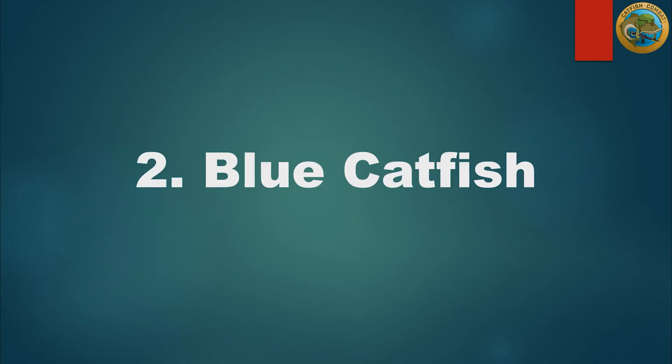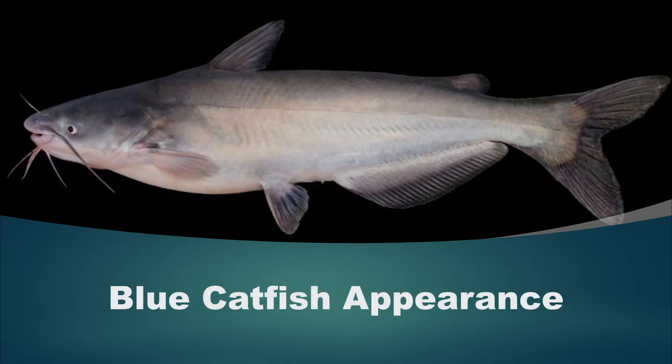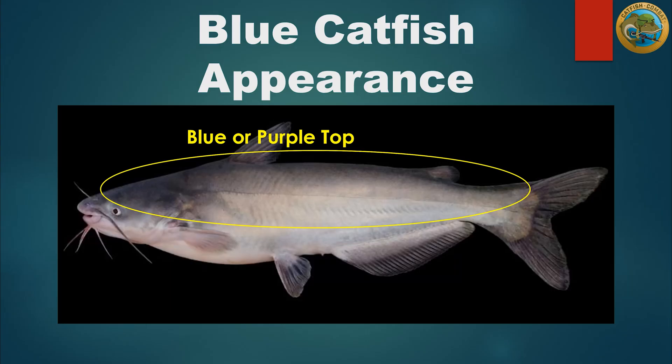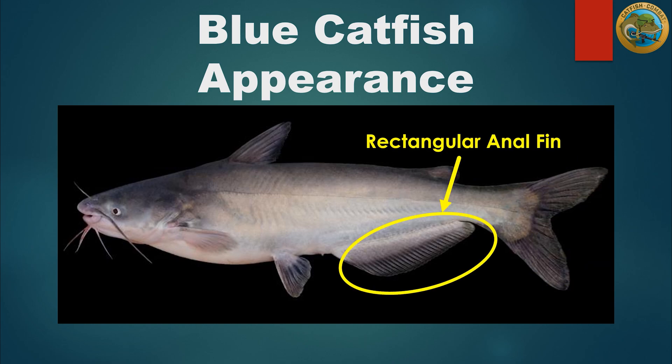Next up is the mighty blue catfish. If there was a fish in American waters that's the bully on the playground and regularly beats out all the other fish and takes their lunch money, it's the blue catfish. This fish is one of the meanest, angriest fish I have ever caught. Blue catfish are built very similarly to channel catfish, but there are some key differences. Blue catfish are, not surprisingly, blue or dark purple on their top and sides with a white underbelly. They have a forked tail like a channel catfish, but the key difference is that their anal fin is rectangular in shape rather than rounded.